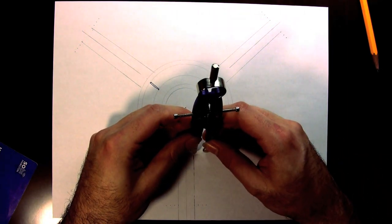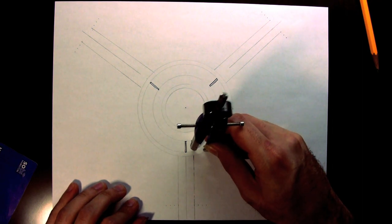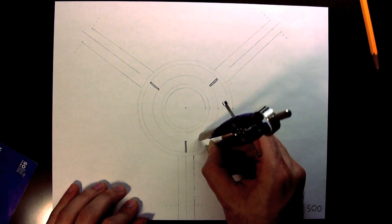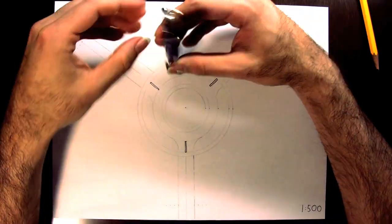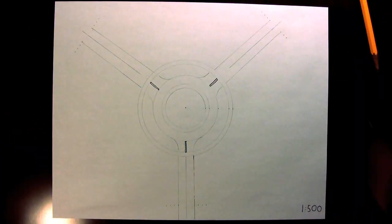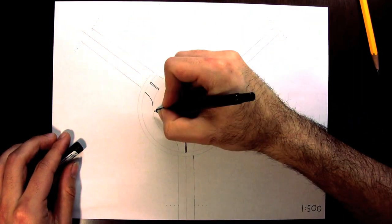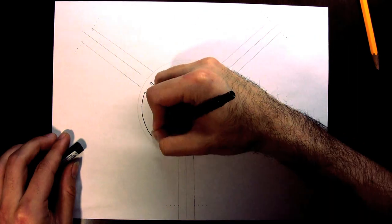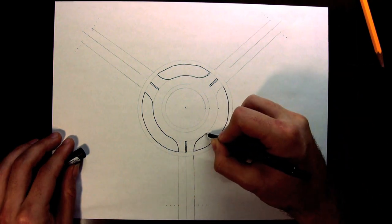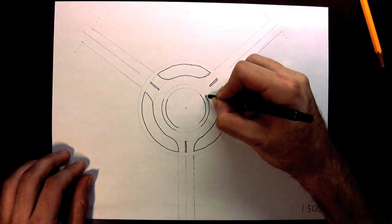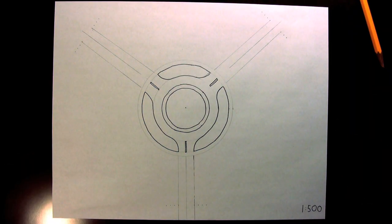This part is a bit of trial and error. I'm just trying to get it lined up so that the end of the curve is perpendicular to the bicycle path. At this point I'm also going to go ahead and outline the islands between the bicycle path and the connecting roadway. Now it's starting to look like a roundabout.